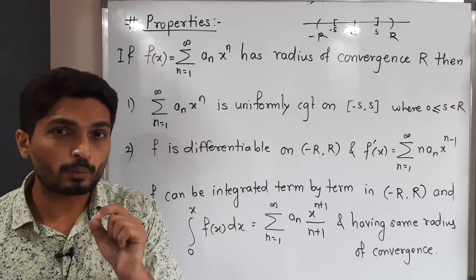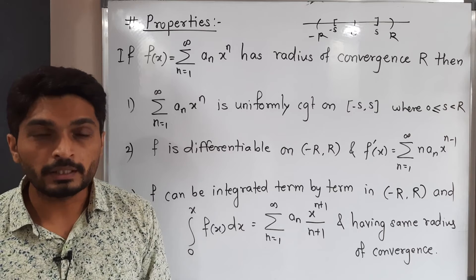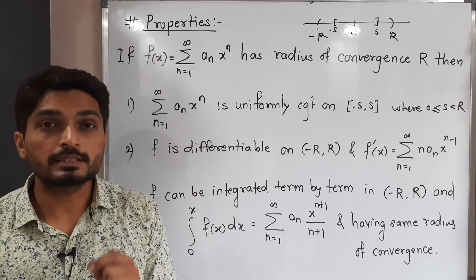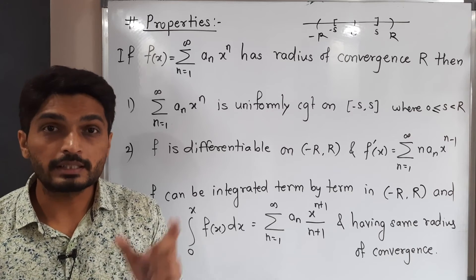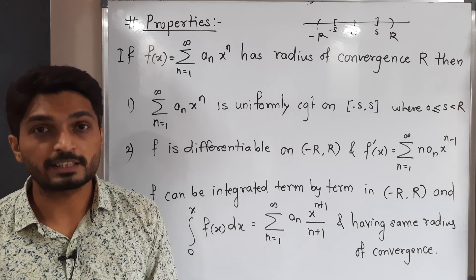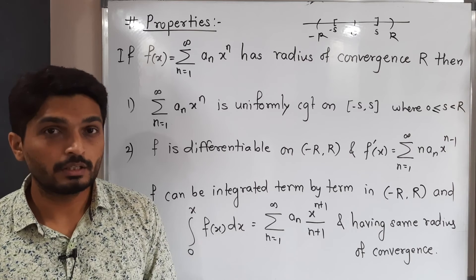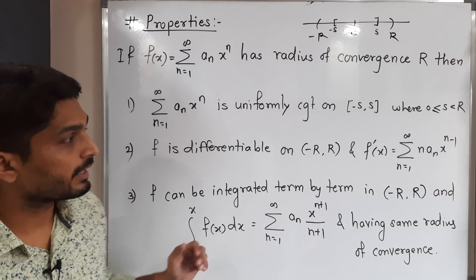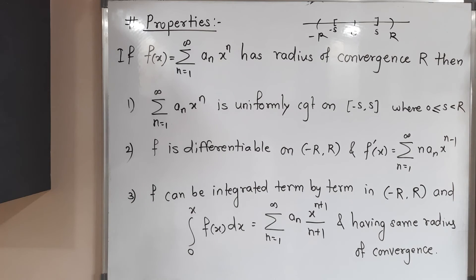One more property to add: the power series is continuous on the interval of convergence (-R, R). So in summary, we have these properties: uniform convergence on closed subintervals, term-by-term differentiability, term-by-term integrability, and continuity — all within the interval of convergence.